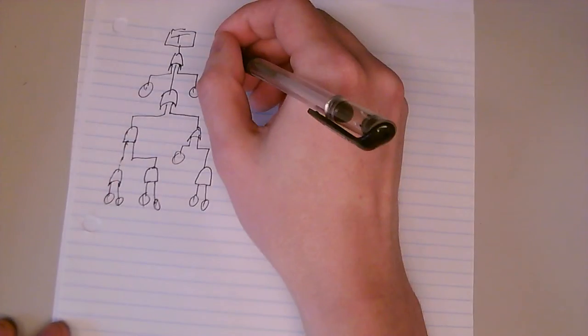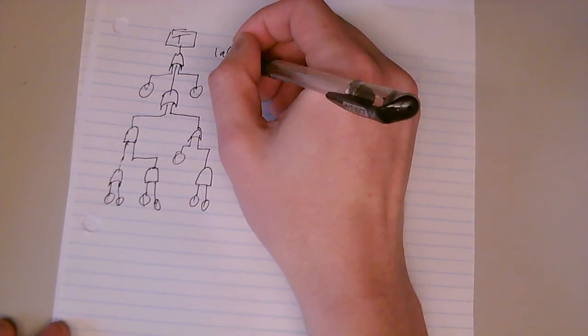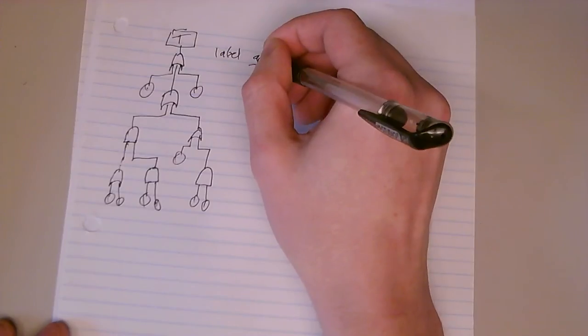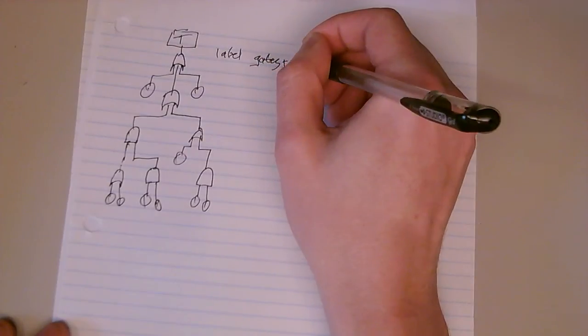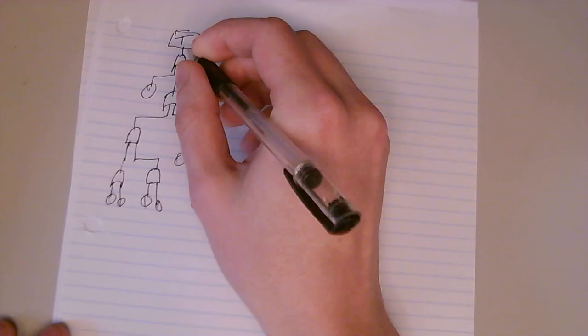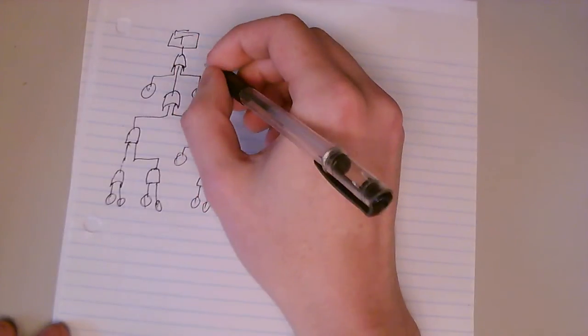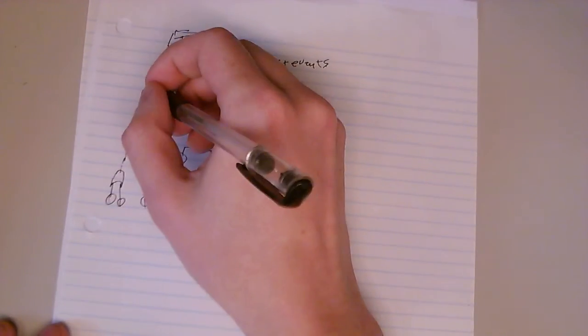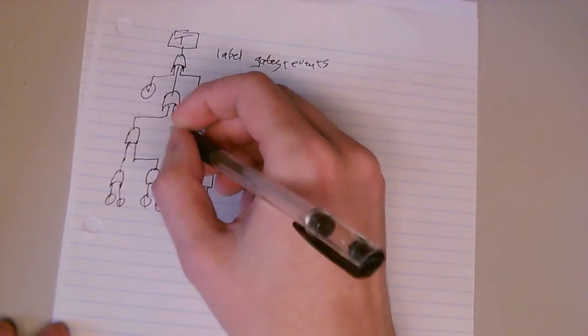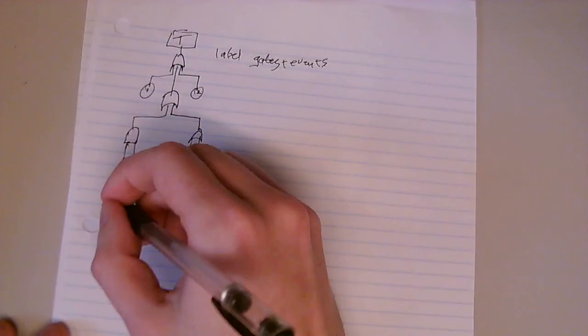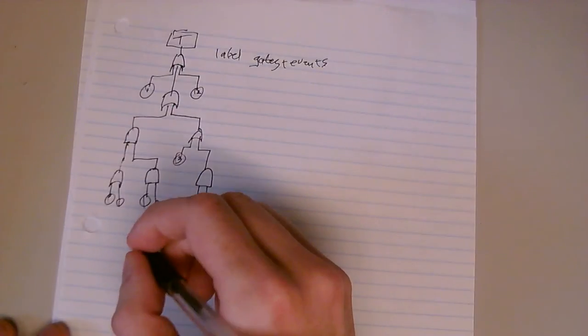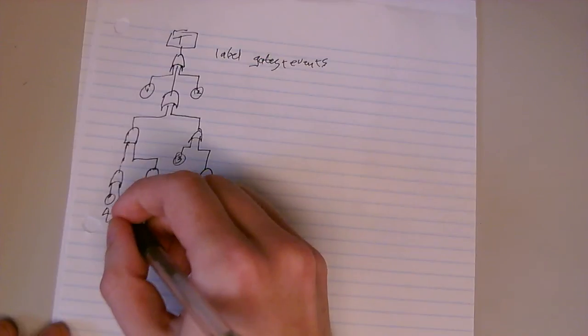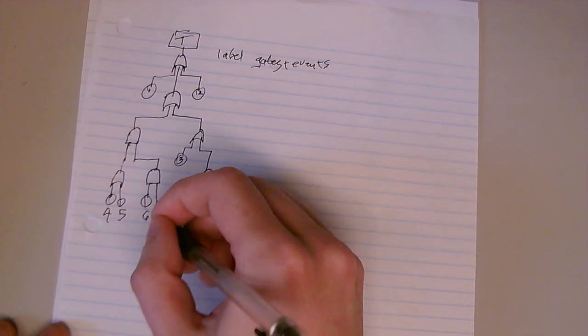The first thing you're going to do is label the gates plus events. And I'm going to use this notation 1, 2, 3, 4, 5, 6, 7...